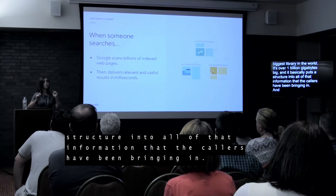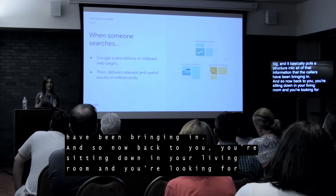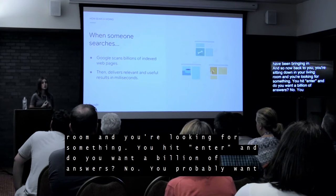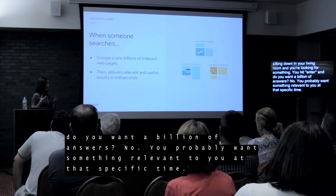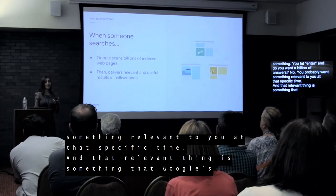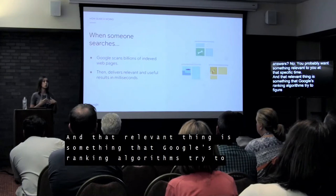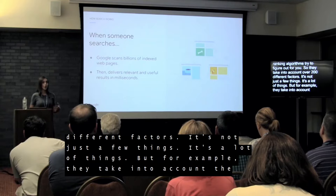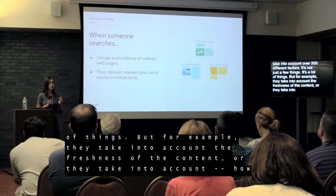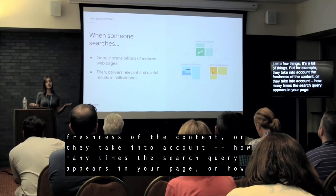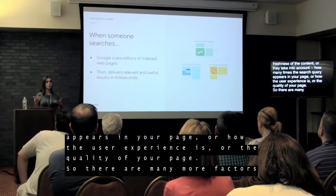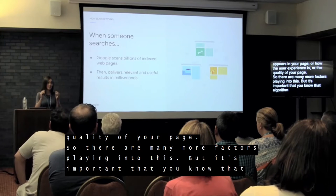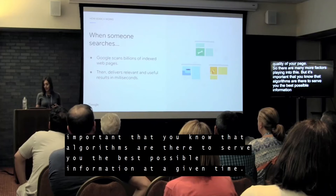Now back to you sitting in your living room, looking for something. You hit enter. Do you want a billion answers? No — you want something relevant to you at that specific moment. That relevant result is what Google's ranking algorithms try to figure out. They take into account over 200 different factors: for example, the freshness of the content, how many times the search query appears on your page, and how users experience the quality of your page. The algorithms are there to serve you the best possible information at a given time.